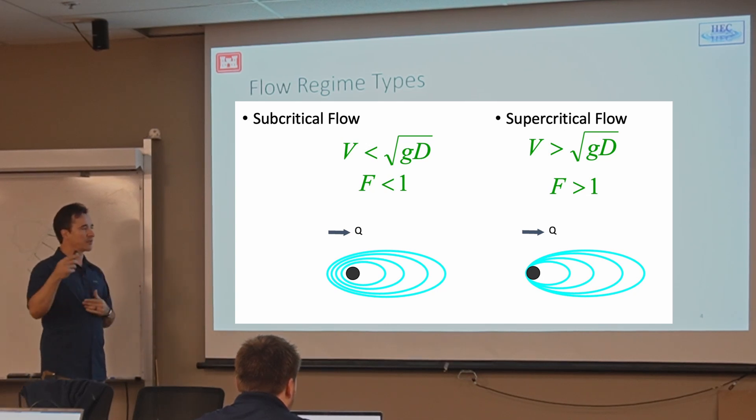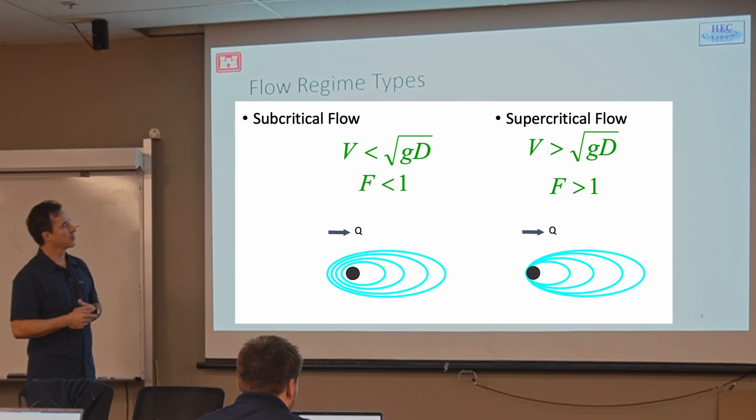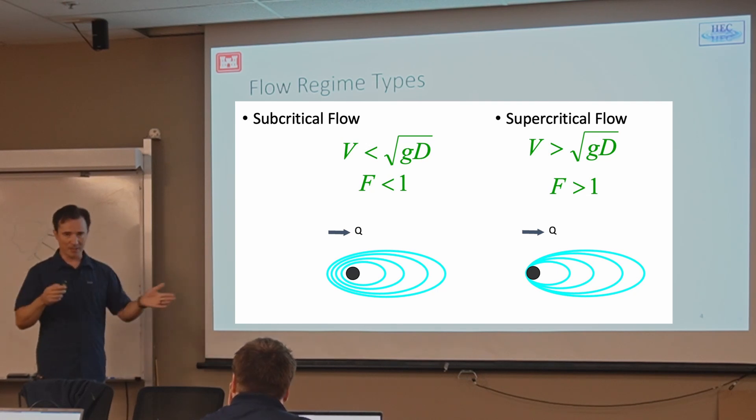So this is why this Froude number is an important parameter in the model, because it determines the behavior of the solution and how we need to go about solving it. And it gets tricky when you have mixed flow. In some places, you have subcritical. In other places, you have supercritical flow. And later in the week, we're going to talk about how we deal with that situation, when parts of the domain are one and other parts of the domain are the other.